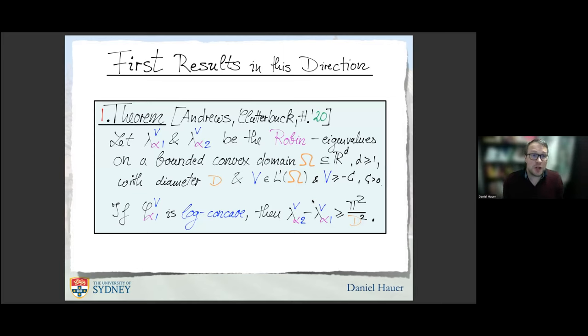What kind of first results did we obtain in this direction? Unfortunately, non-optimal bounds. When V is an L1 function which is bounded from below—this is a condition you need to ensure you have a discrete spectrum of the Schrödinger operator—then let λ_α^1(V) and λ_α^2(V) be the first and second Robin eigenvalues. If you can show that the first eigenfunction is log-concave with Robin boundary condition, then the fundamental gap is larger or equal than π²/d². This holds for any alpha.